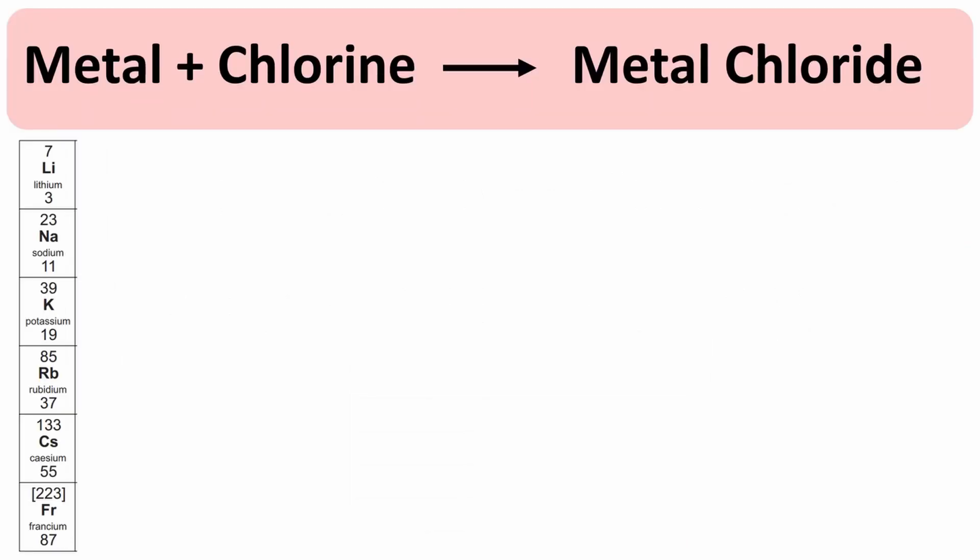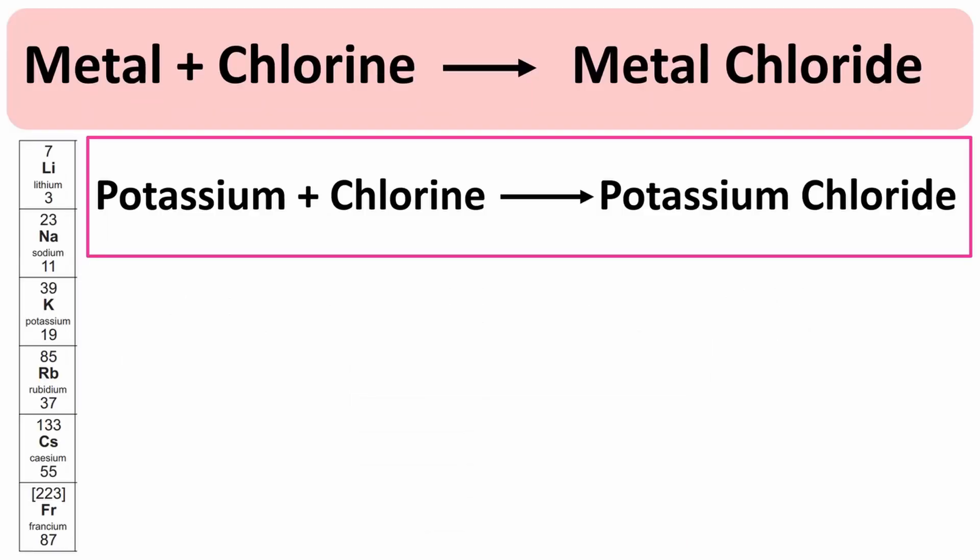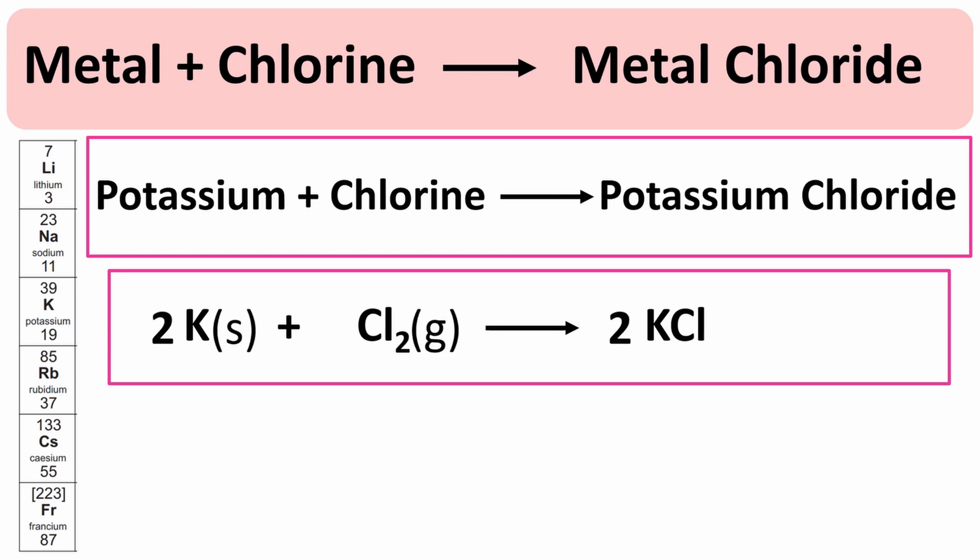Okay, so this is what you should have. Potassium plus chlorine, arrow potassium chloride. Your symbol equation should be like this, with the state symbols. It's balanced. And obviously potassium is lower down, so it's more reactive, it's more vigorous compared to sodium and lithium.